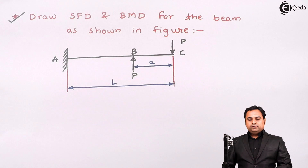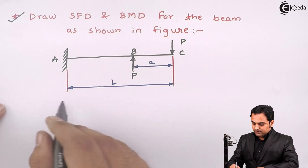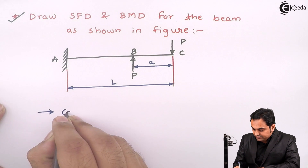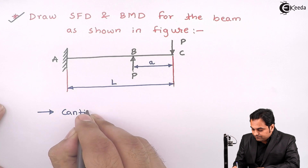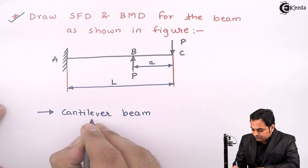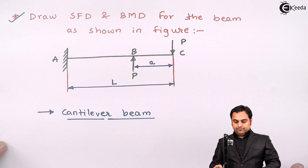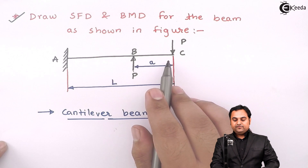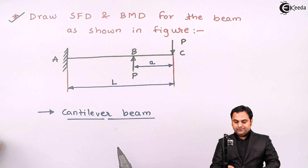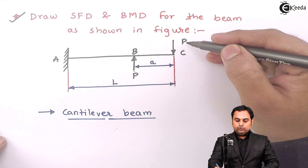Here the beam is given. Just by looking at this beam, I can say that it is a cantilever beam. When we have a cantilever beam, it is fixed at one end and free at the other end. In this problem, the cantilever beam is loaded at the free end. The load value is P.